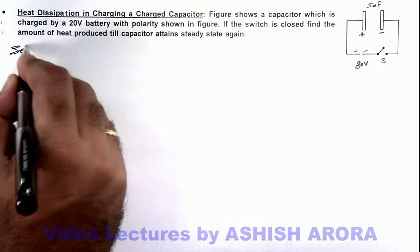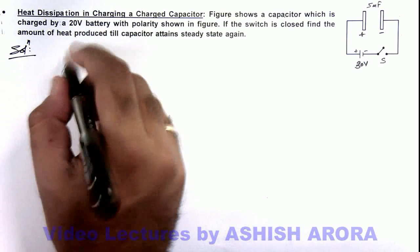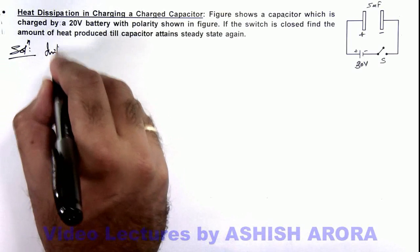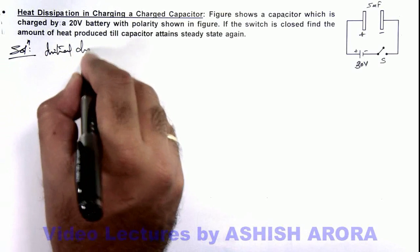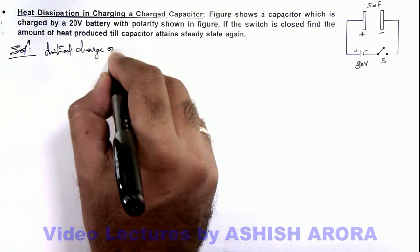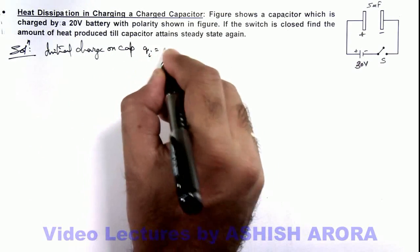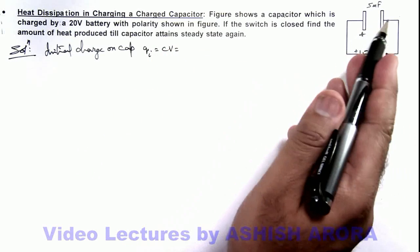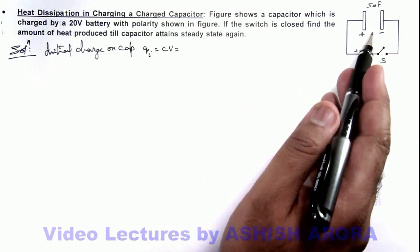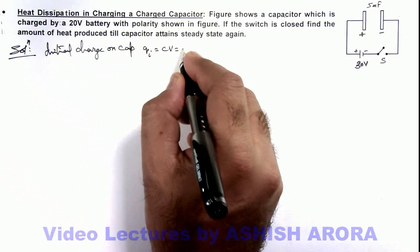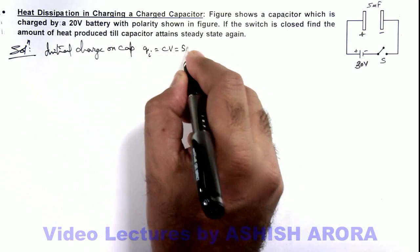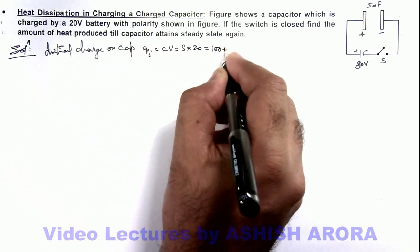Here if we calculate the initial charge on the capacitor, this initial charge we can calculate as CV. The value of C is 5 microfarad and initially it was charged by a 20 volt battery, so it is 5 multiplied by 20, that is 100 microcoulomb.